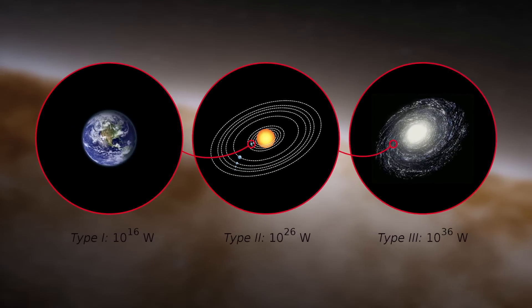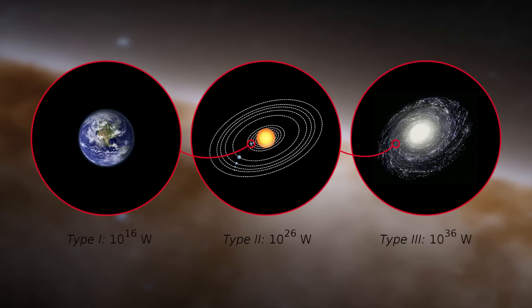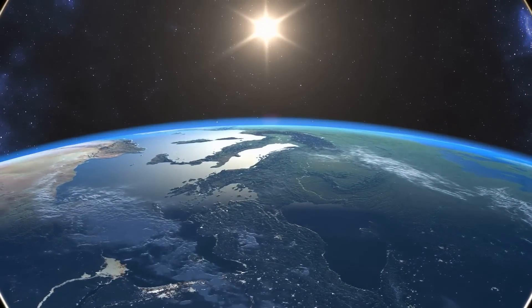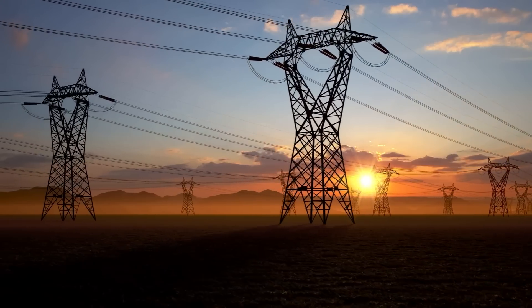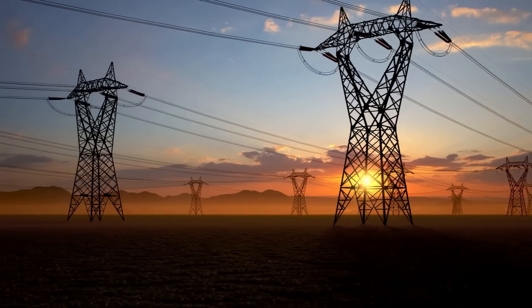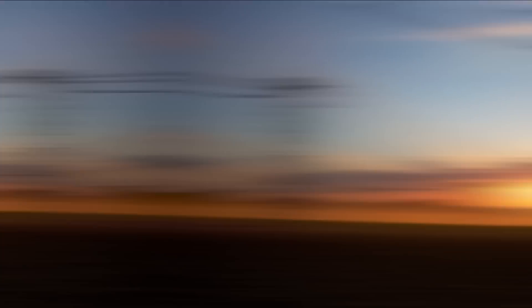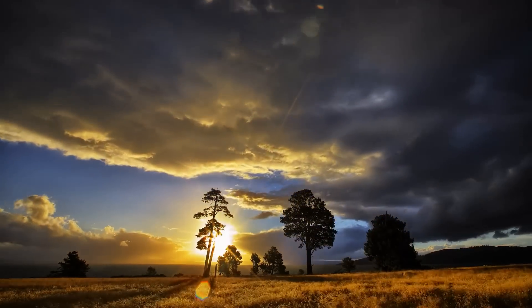According to the Kardashev Scale, we humans do not come off quite so well at the moment. We are somewhere around 0.6. We do use the energy of our planet, but we have caused great destruction and environmental problems in the process. We are just beginning to use solar energy, so to speak.